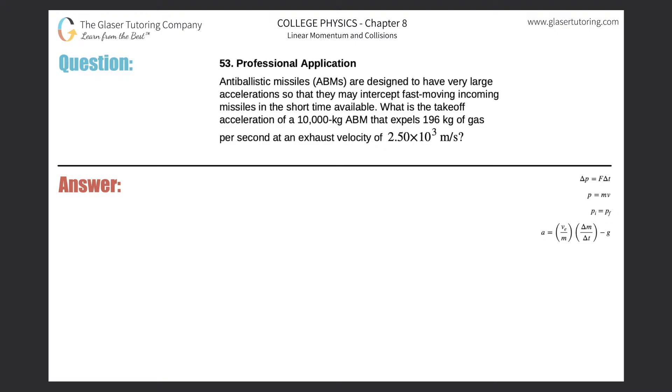Number 53, professional application. Anti-ballistic missiles, or ABMs, are designed to have very large acceleration so that they may intercept fast-moving incoming missiles in the short time available. What is the takeoff acceleration of a 10,000 kilogram ABM that expels 196 kilograms of gas per second at an exhaust velocity of 2.5 times 10 to the 3 meters per second?